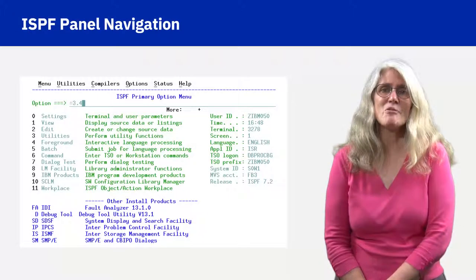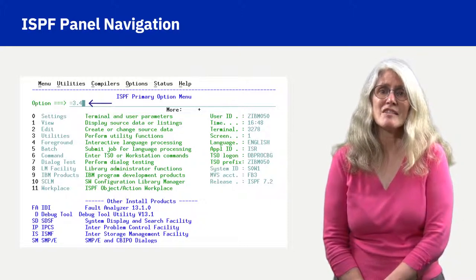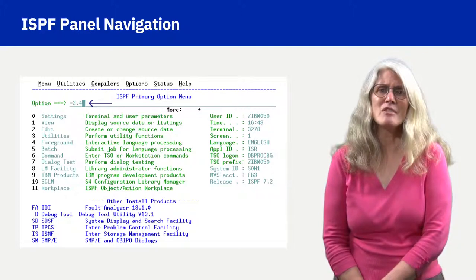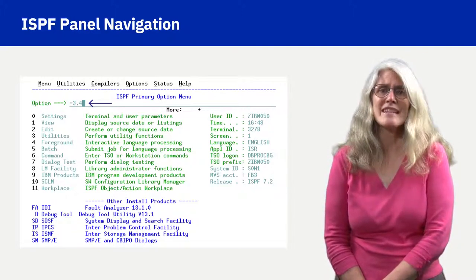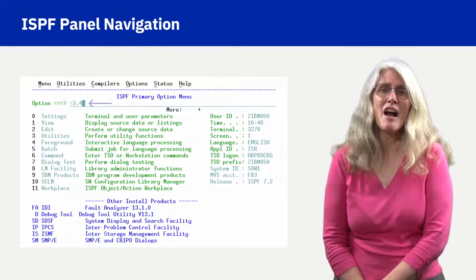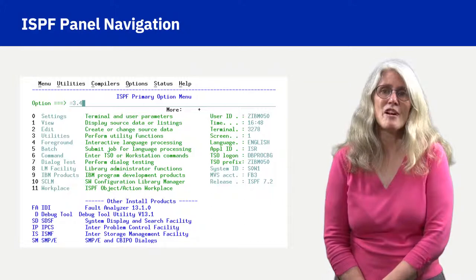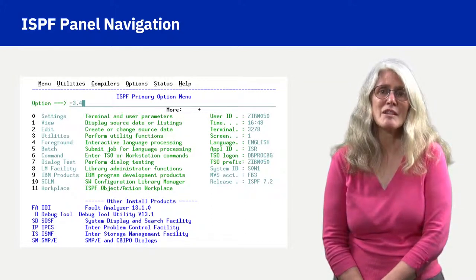Entering 3.4 from the primary option panel would jump directly to the Dataset List Utility panel. The chart example shows an equal symbol in front of the 3.4. The equal symbol is unnecessary on the primary option menu, but it eliminates the need to be on the primary option menu to jump to the 3.4 Dataset List Utility panel. When on any other ISPF panel, the equal is treated as if the option is being entered from the primary option menu.